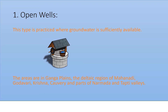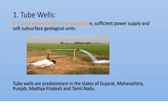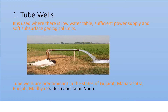Open wells are used in the Ganga Plains and in areas like the Godavari, Krishna, Kaveri, Narmada, and Tapti valleys. Tube wells are used in areas with low water tables, sufficient power supply, and soft surface geological units. These areas have good access to groundwater.